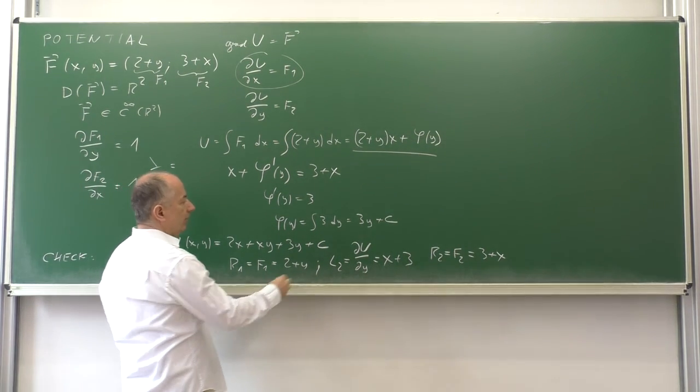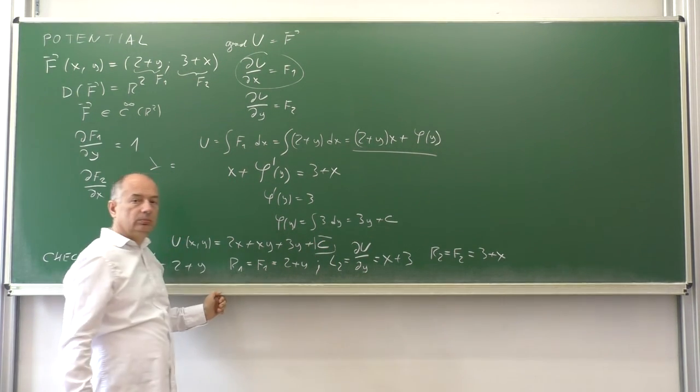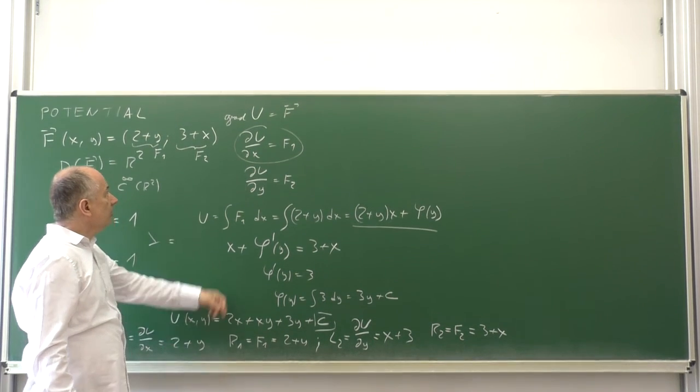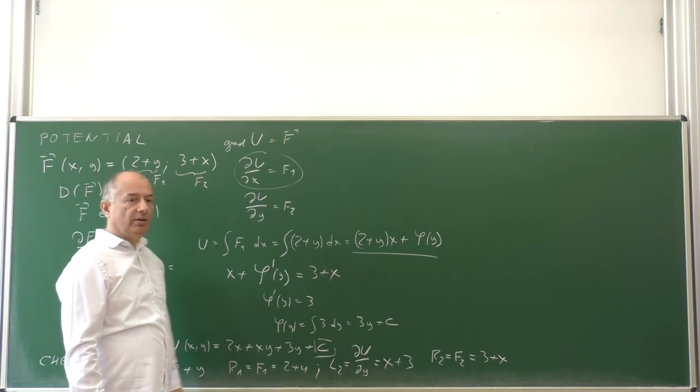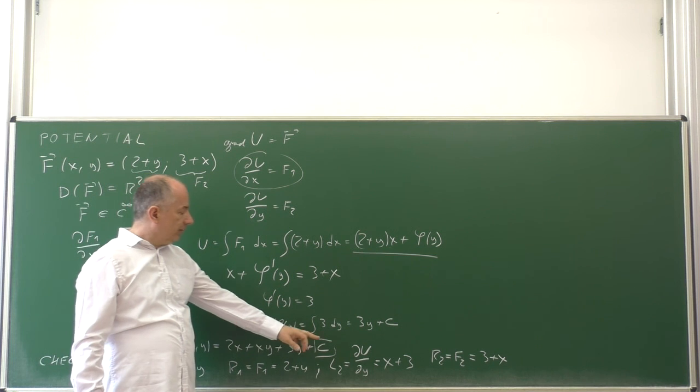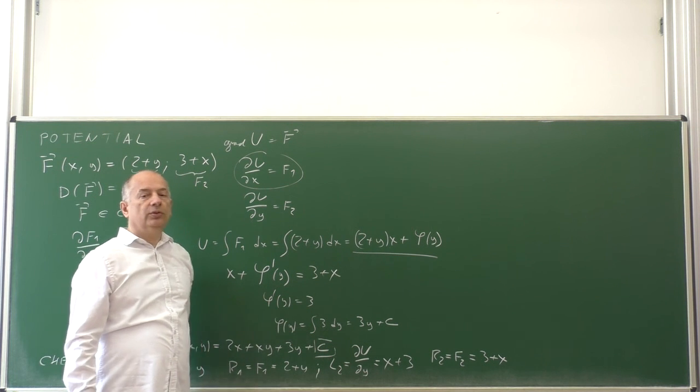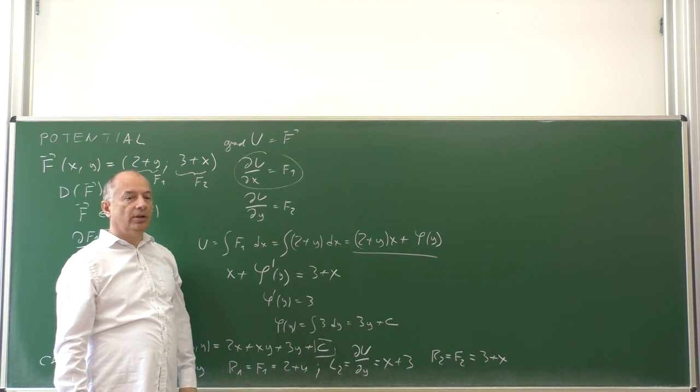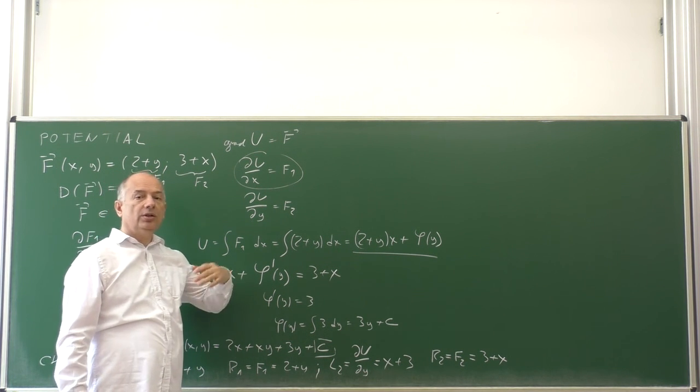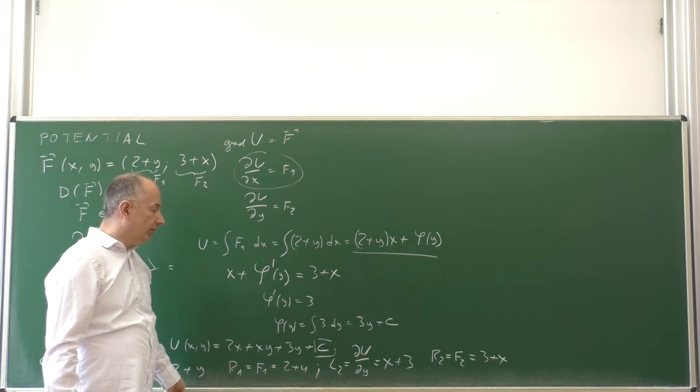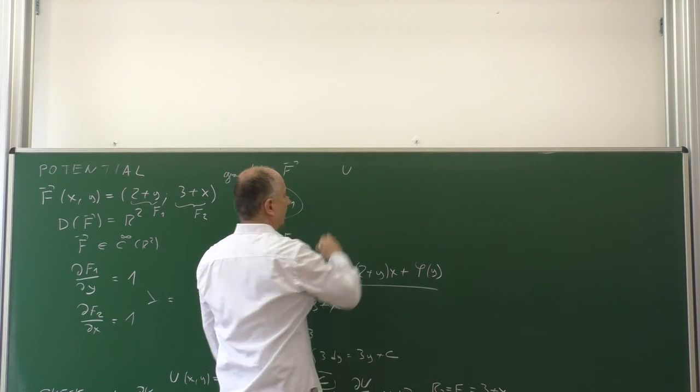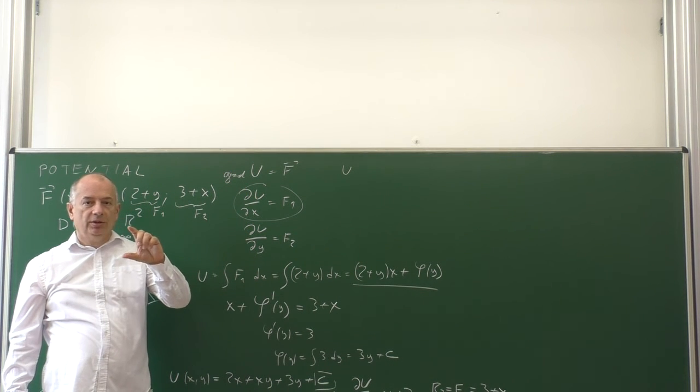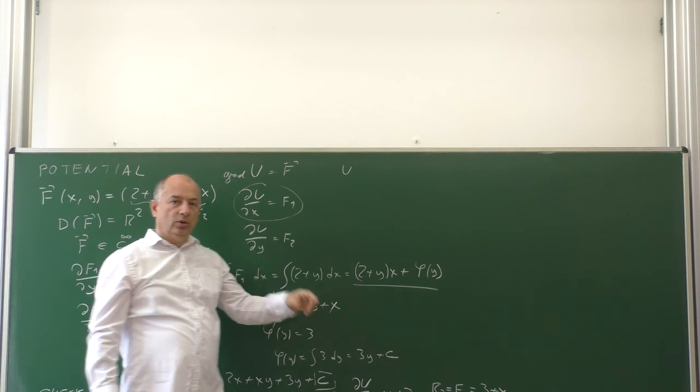It is given up to an additive constant. From this condition alone, the constant cannot be determined. To have some numerical value for the additive constant c, we need some more information. This extra information can be specified by giving the potential value at one point.